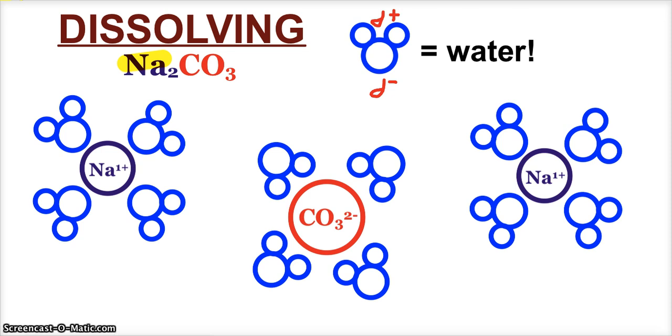we see we have two sodium ions and a carbonate ion dispersed amongst the water molecules. But do pay attention to the alignment of the water molecules. We have the partial negative oxygen ends of the water molecules surrounding the sodium ions.